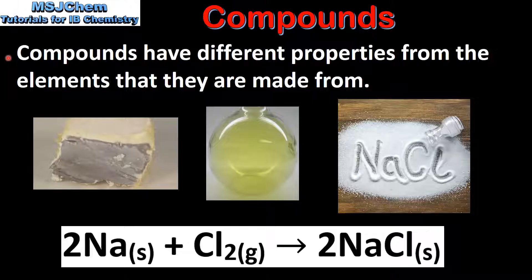Compounds have different properties from the elements that they are made from. An example of this is the reaction of sodium with chlorine to produce sodium chloride. Sodium is a reactive metal and chlorine is a poisonous yellow-green gas. Together they react to form sodium chloride, also known as salt, which has very different properties from the elements it is made from.